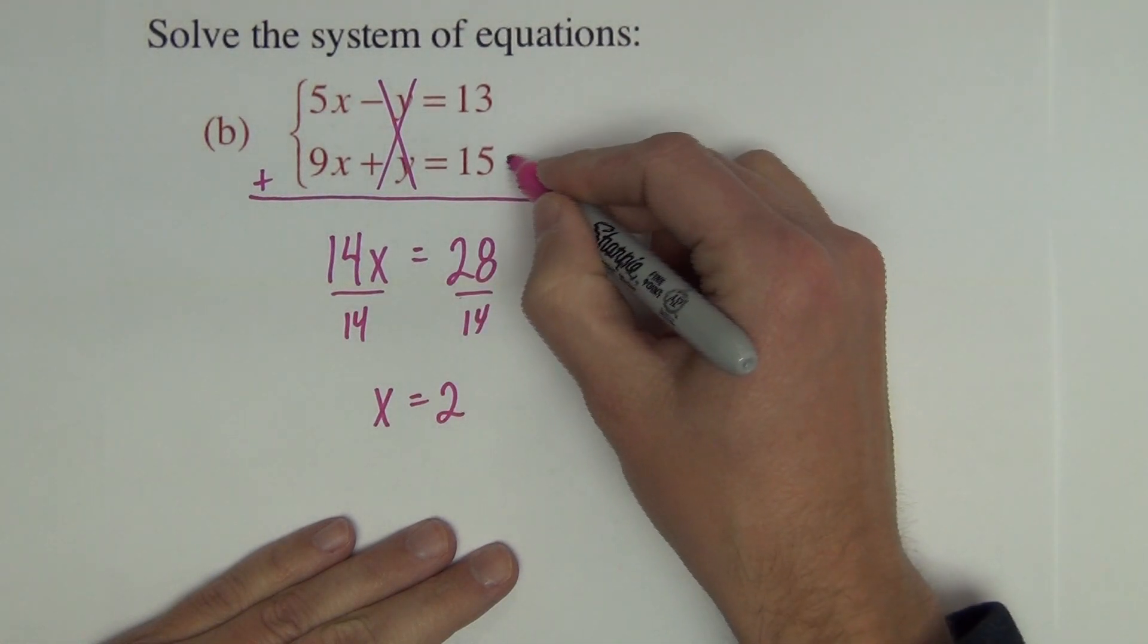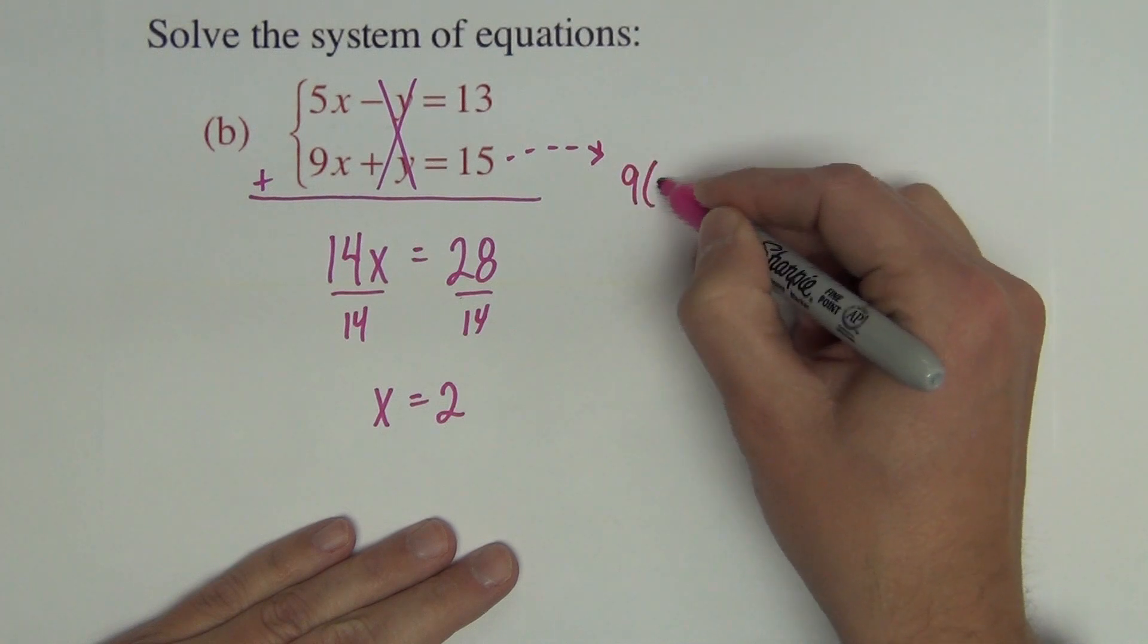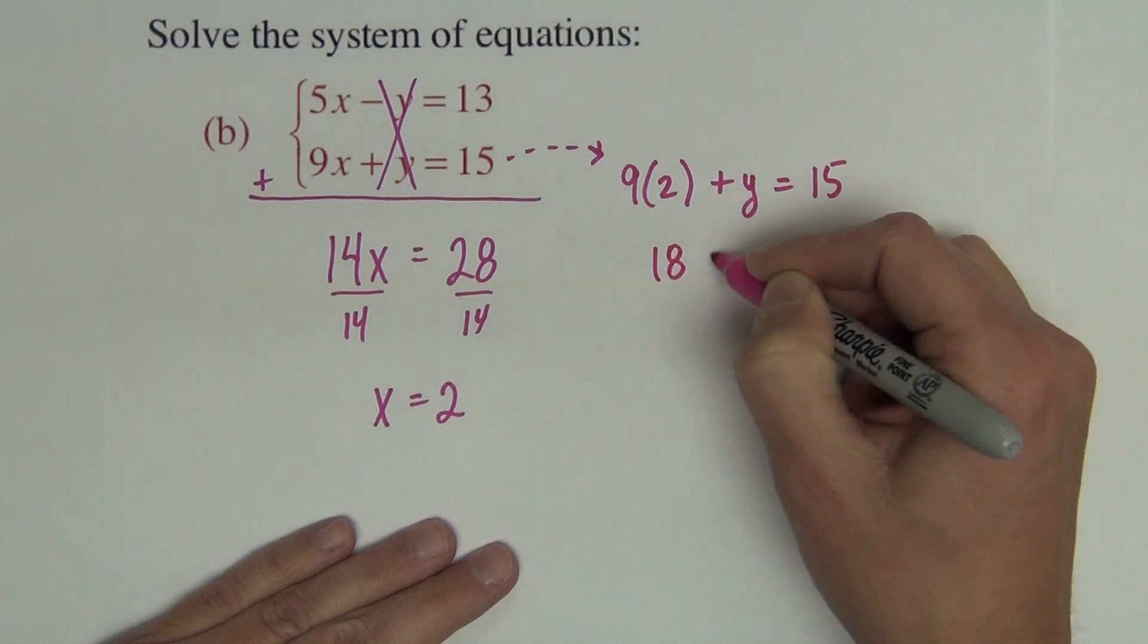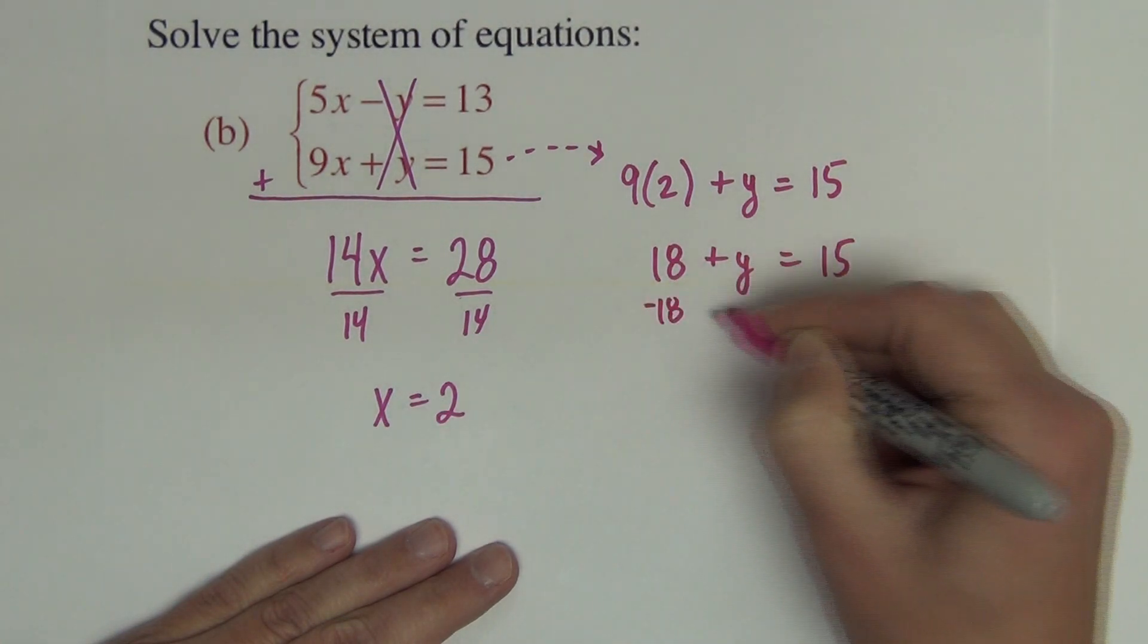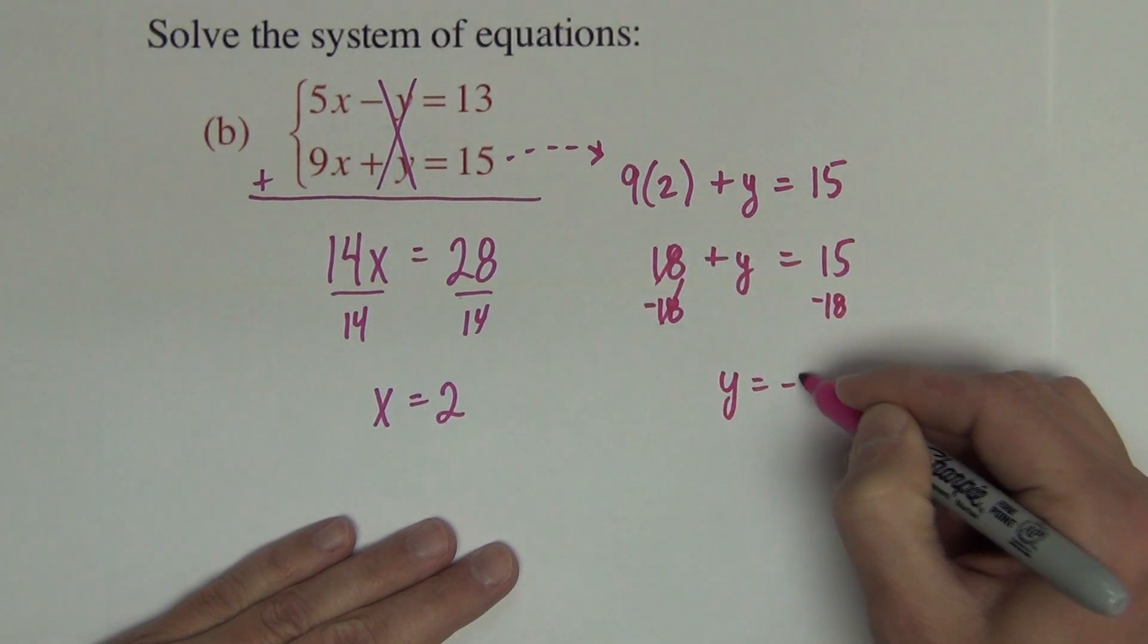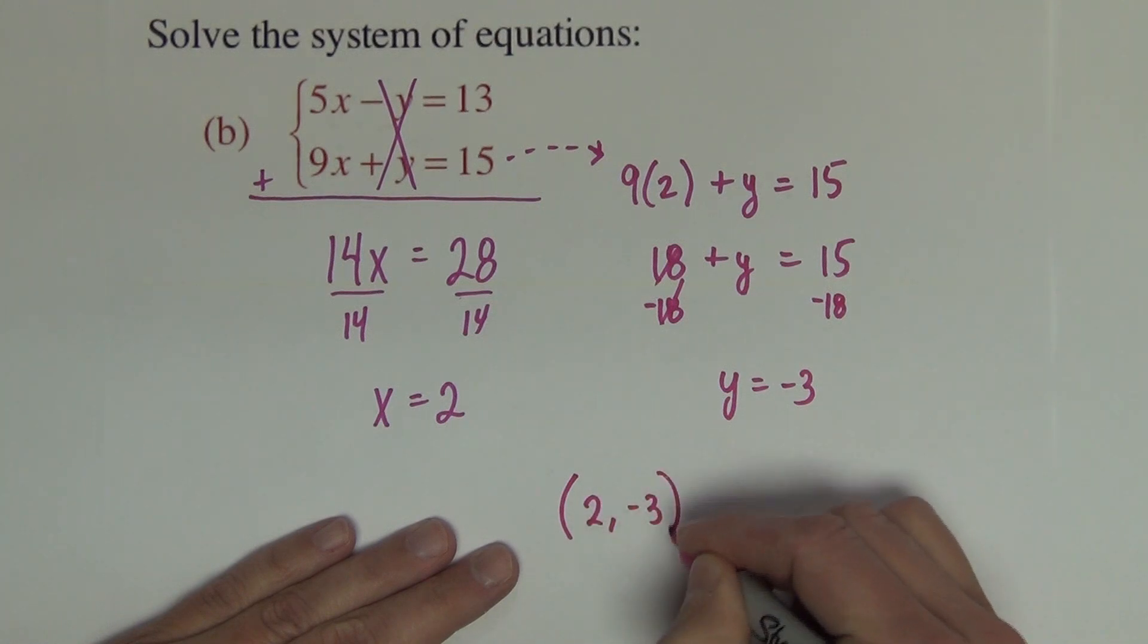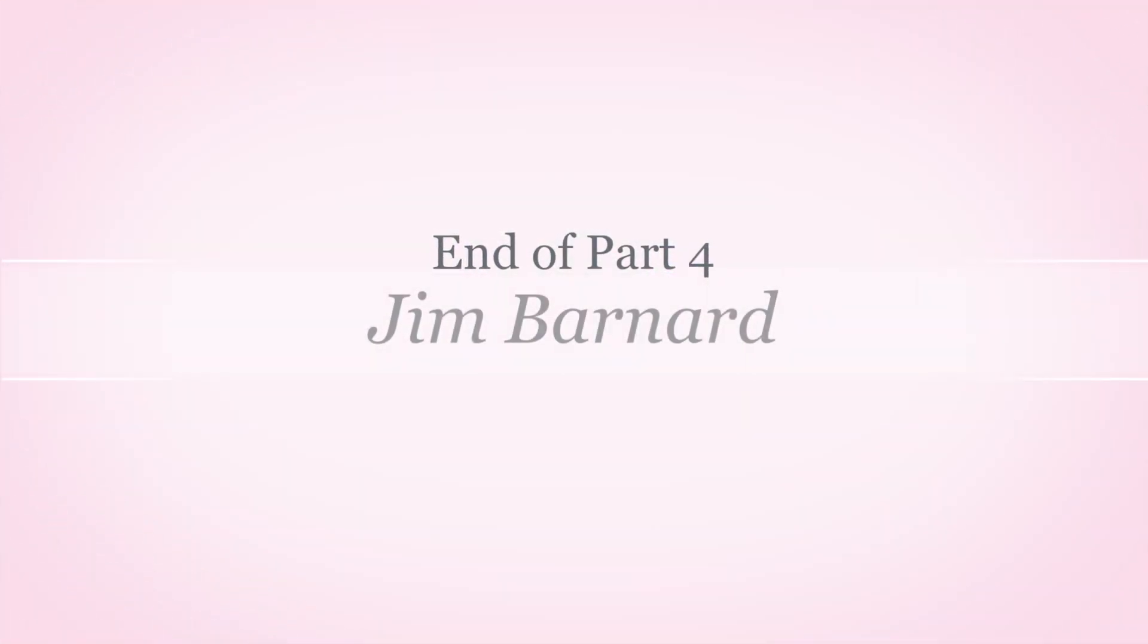Okay, so take one of these equations, say this one, and let's put 2 in for the x. So that's 18 plus y equals 15. Subtract 18, and we get y equals negative 3. So we get an ordered pair of (2, negative 3).